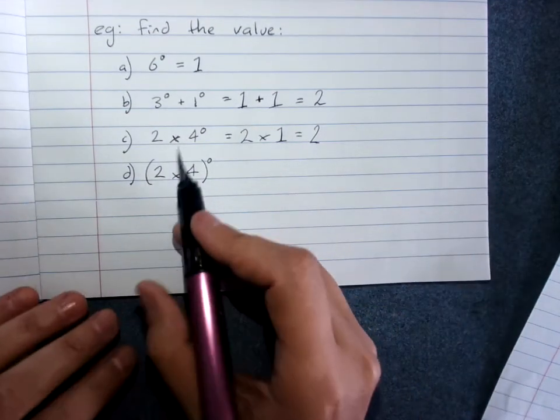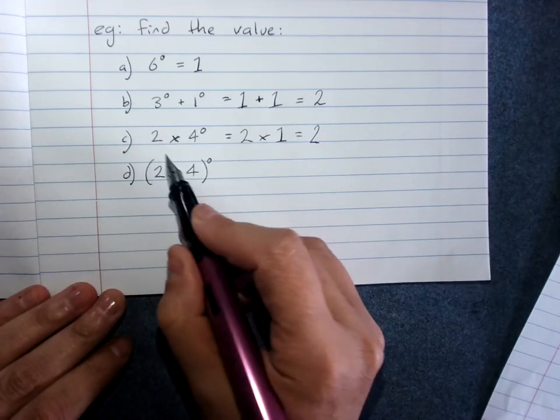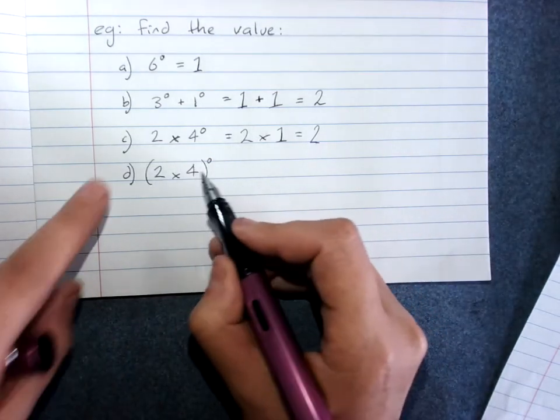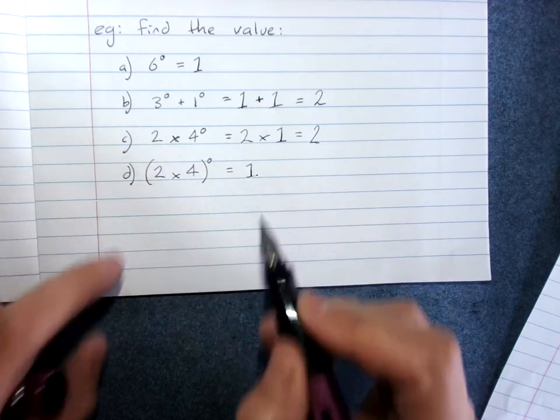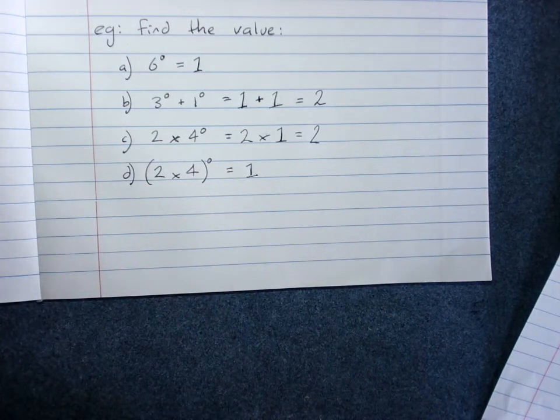Here they're being really tricky: 2 times 4 all raised to the power of 0. Well everything in this is to the power of 0, so it means the whole thing equals 1.